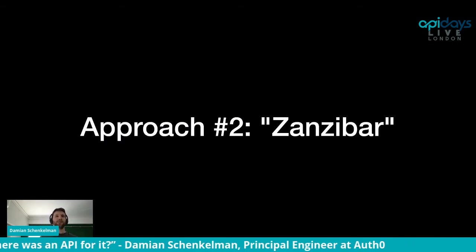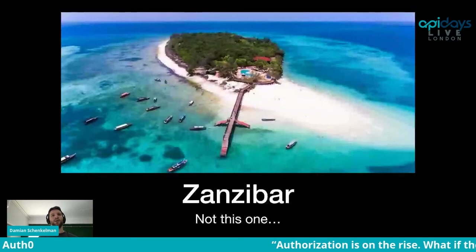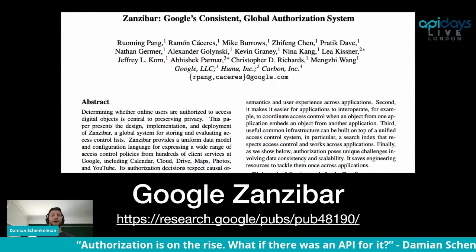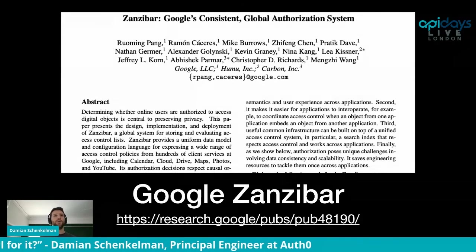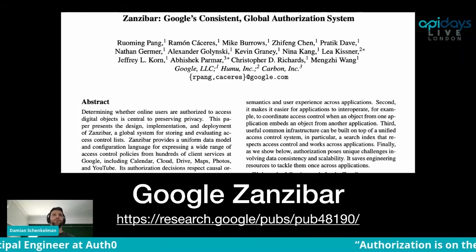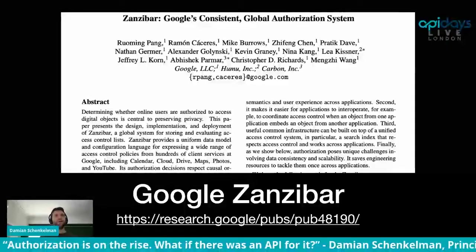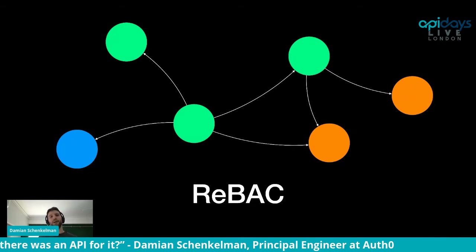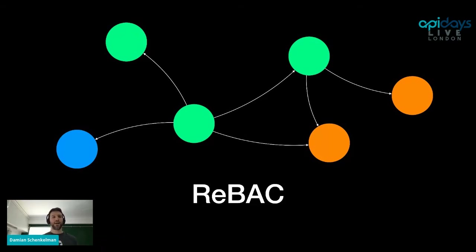A new approach is what's known as a Zanzibar-inspired approach, and this is the one we took. Zanzibar is not the island — it's a paper written by Google explaining how they built a system that powers authorization for all their products: Calendar, Cloud, Drive, Photos, YouTube, etc. Unlike RBAC and ABAC, Zanzibar does ReBAC — relationship-based access control. A user's ability to perform an action on an object depends on their relationship to it. For example, I might be able to view a document if I am a viewer of the folder that contains it.